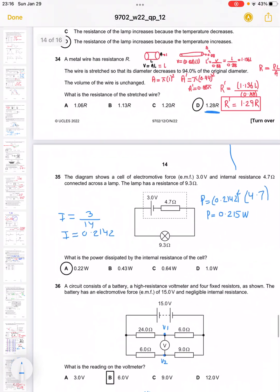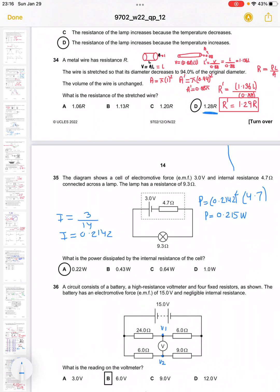Question 35 asks what is the power dissipated by the internal resistance of the cell. First, find the current in this circuit, which is evaluated by I equals V over R. That is 3 over 14, which is 4.7 plus 9.3. Current is 0.2142. Then we apply P equals I squared R and evaluate. B is the proper answer.